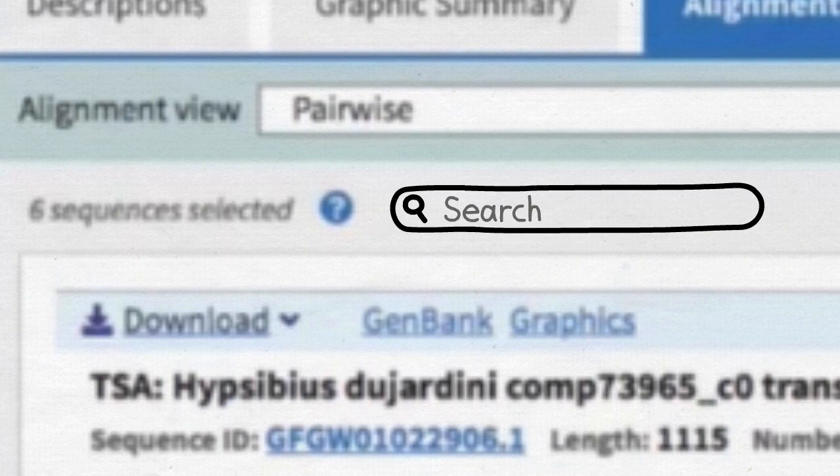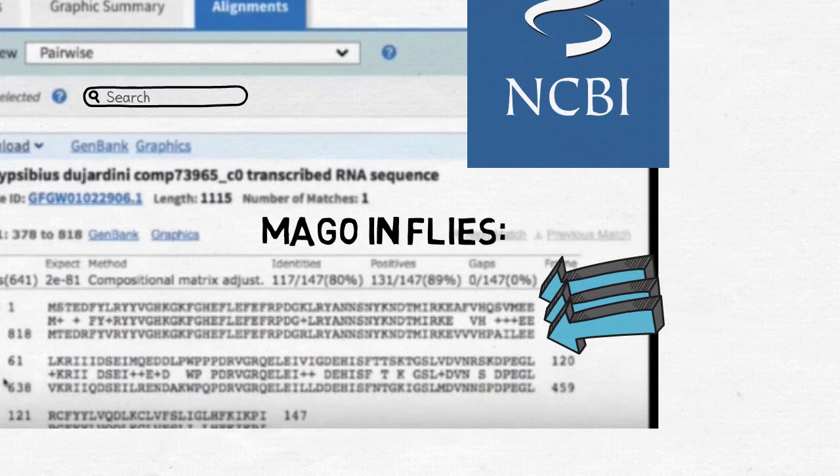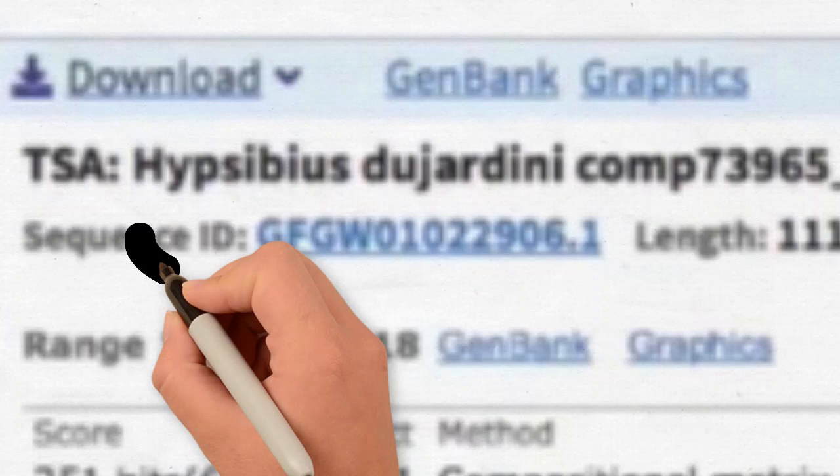So I asked it to search all of the tardigrade sequences to see if it could find a protein sequence that was similar to the fruit fly MAGO. And what I'm showing on the screen here is the results that came out of this search. The lower line here corresponds to the tardigrade version of MAGO. So the other thing I can learn from this is what the actual DNA sequence looks like. So I can click on this link here. And that will take me right to the tardigrade gene sequence for MAGO. So now I know what the DNA looks like. And I know what the messenger RNA looks like based on this sequence.